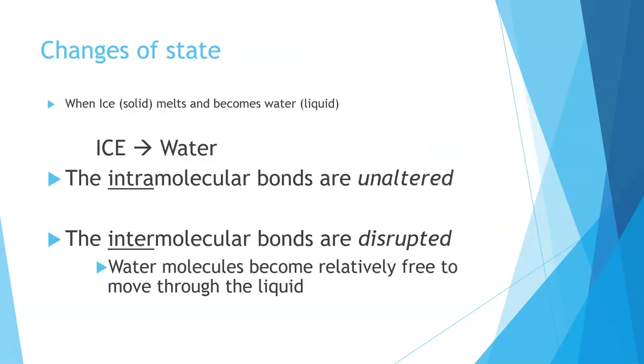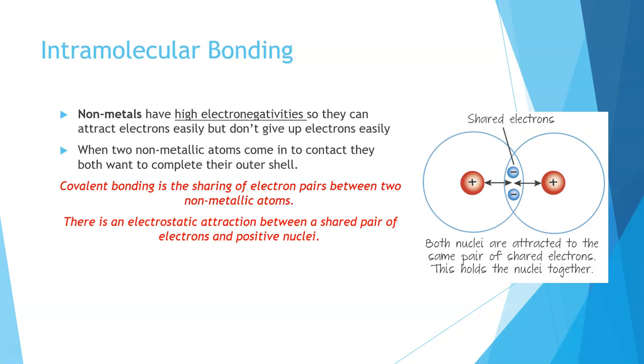For intramolecular bonding, we're talking about nonmetals. So this means that they're on the right-hand side of our periodic table, so they have high electronegativities. These elements are able to attract electrons easily and don't give them up. So they will share, but they're not going to give them away. So the sharing of electron pairs between two nonmetallic atoms is how we define the covalent bond.